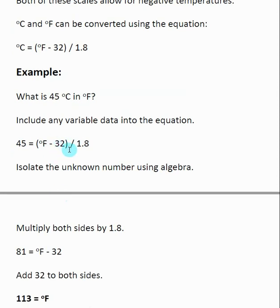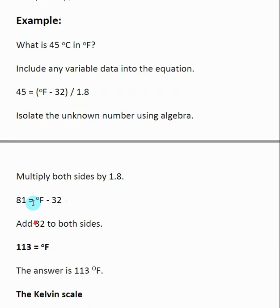The next step is I want to get rid of this 1.8 on the bottom, so I'm going to multiply both sides by 1.8. Here on the right that will get rid of the 1.8. On the left we take 45 and multiply by 1.8. This is what we end up with: 81 = °F - 32.